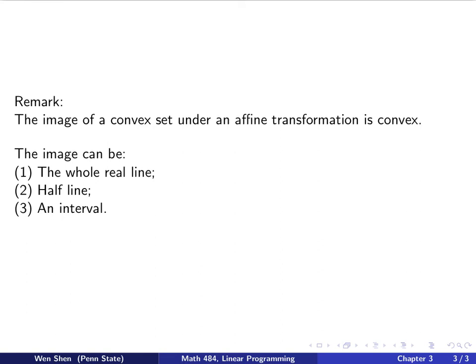Let's make a remark. The image of a convex set under an affine transformation is convex. Since we are talking about values — an affine transformation taking values — this image is one-dimensional, so it could be one of three situations: first, the whole real line; second, a half line; or third, an interval. All three of these sets are convex sets.